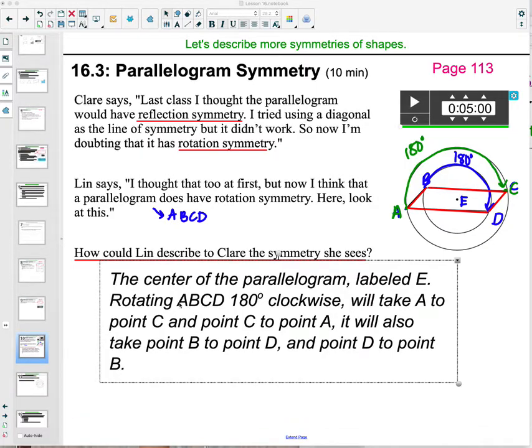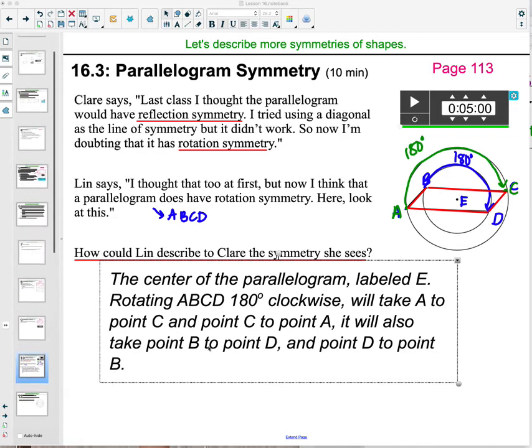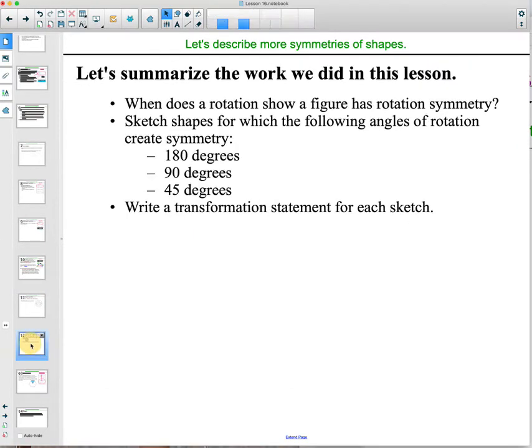Now this isn't the only description you could write. This is just mine. You could also say something about the segments rotating. So if you wanted to say rotating 180 degrees, that will rotate segment AB over to CD and CD over to AB. So if you wanted to be talking about the segments, you certainly could. So this is not the only way to describe this.